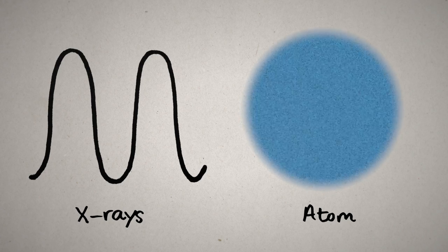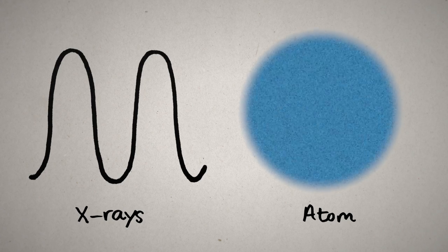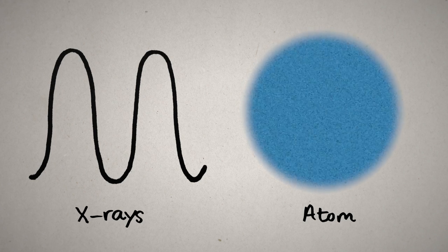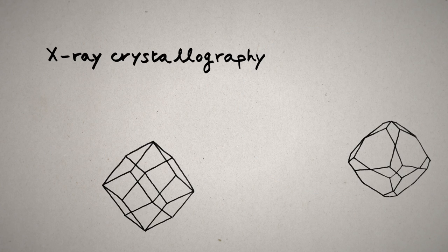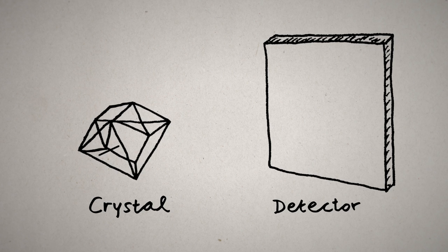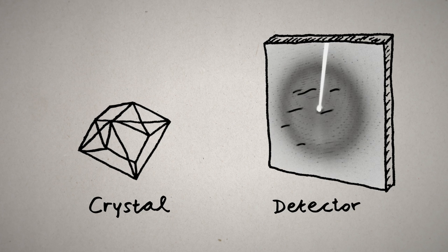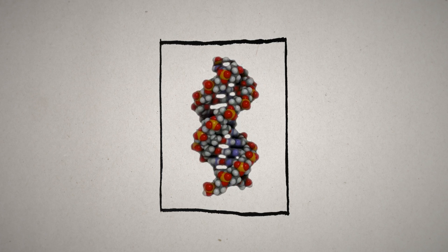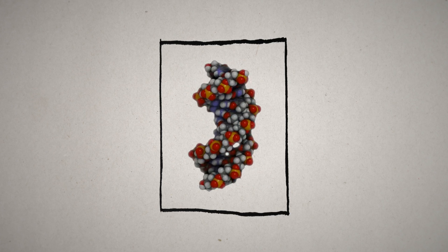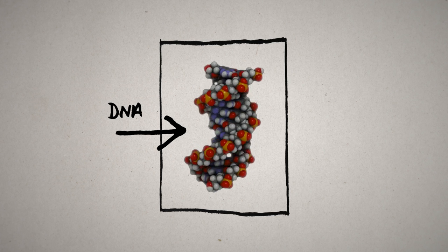X-rays, a form of light, has a wavelength about the size of an atom, meaning they can help us see small things. Today we regularly use them in a technique called X-ray crystallography to determine how atoms are arranged in matter. It works by measuring how X-rays are scattered by atoms in a crystallized sample. It's an incredibly powerful technique and has led to many Nobel Prize winning discoveries, including the structure of DNA.